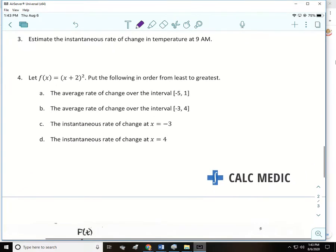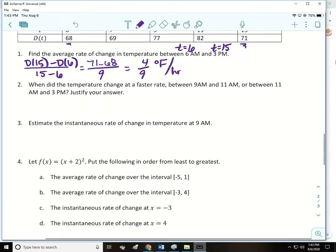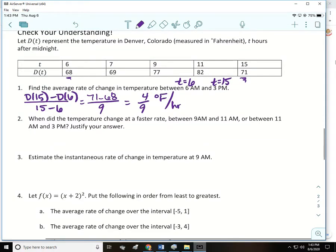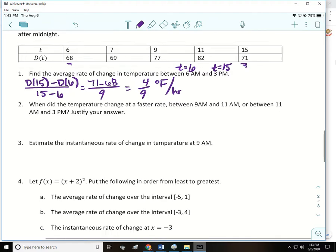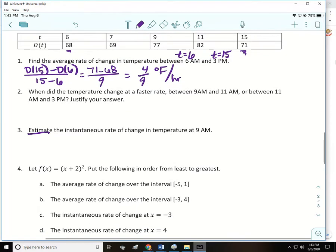We're going to skip number 2 and go to number 3. We're going to estimate the instantaneous rate of change in temperature at 9 a.m. We know the temperature at 9 a.m., but we don't know the instantaneous rate of change, and we can't know it. But what we can do is estimate it. To estimate it, I can find the average rate of change around 9. So I could use 7 and 11, I could use 7 and 9, I could use 9 and 11. Let's just go ahead and do between 9 and 11. So we'll do D of 11 minus D of 9 over 11 minus 9.